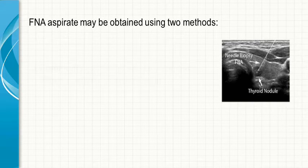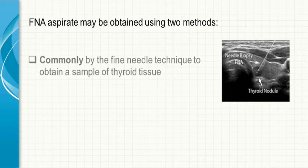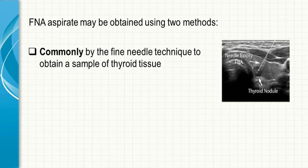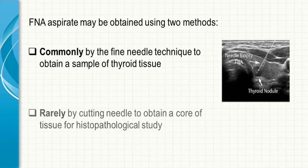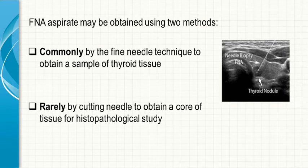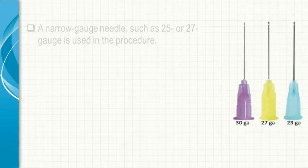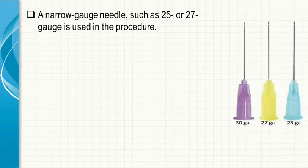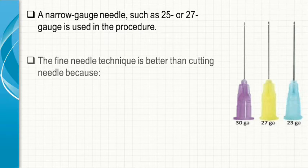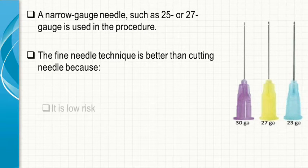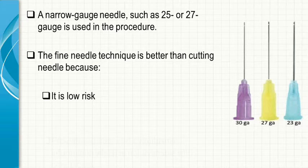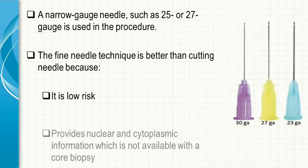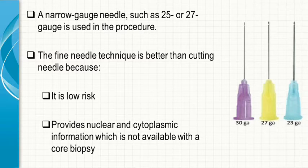FNA may be obtained using two methods: commonly by the fine needle technique to obtain a sample of thyroid tissue, and rarely by cutting needle to obtain a core of tissue for histopathological study. A narrow gauge needle such as 25 or 27 gauge is used. The fine needle technique is better than the cutting needle because it is low risk and provides nuclear and cytoplasmic information which is not available with a core biopsy.